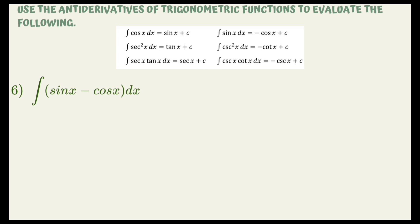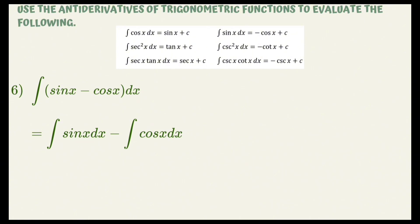For example number 6, evaluate the integral of sine x minus cosine x dx. Since we have a subtraction operation, we separate the two: the integral of sine x dx minus the integral of cosine x dx. Looking at the given formula of antiderivatives of trigonometric functions, the integral of sine x is equal to negative cosine x, and the integral of cosine x is equal to sine x. Our final answer is negative cosine x minus sine x plus C.